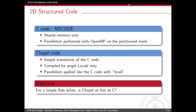For the 2D structured code, we took an already existing code called NS code. It is a shared memory-only code where parallelism is performed with OpenMP on a partitioned mesh. For the Chapel implementation, we simply converted the code to Chapel and used forall loops for parallelism over the partitioned mesh.